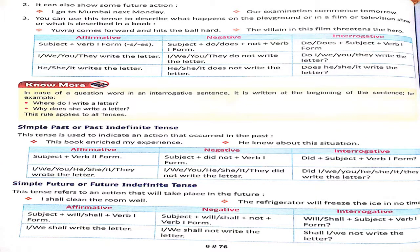As you can see on screen: for affirmative, it is Subject + Verb first form + S/ES. For negative, 'do not' or 'does not' is added plus the verb's first form. You can add object in all three types. Now in past tense, wherever the verb's first form was used, you will use the second form instead — that makes it past tense. For negative past, we use 'did not' for both singular and plural. For interrogative, 'did' comes first.